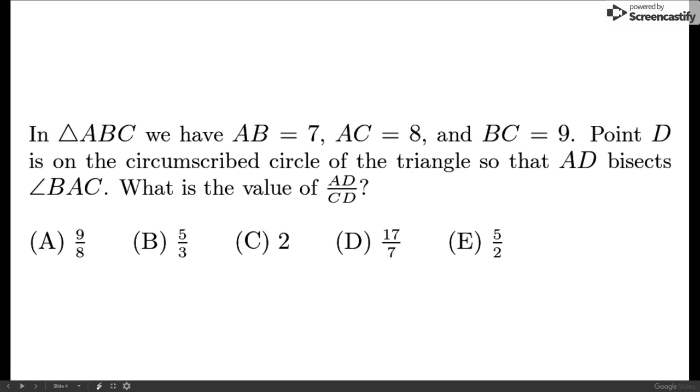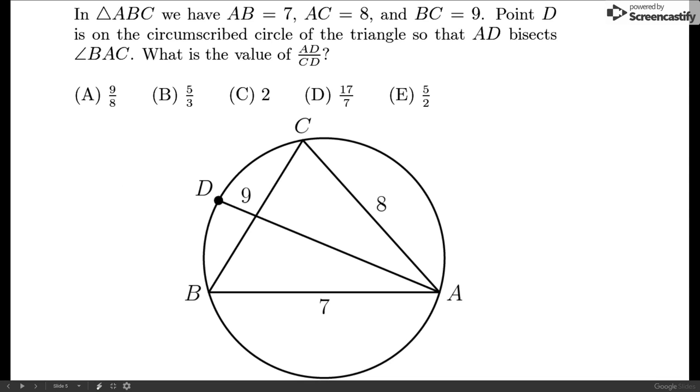Now with the geometry problem, the first step should always be to draw a picture. So I took the liberty of drawing a diagram. And as you can see, AD bisects angle CAB, and then the side lengths of CB is 9, BA is 7, and AC is 8.